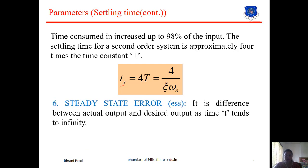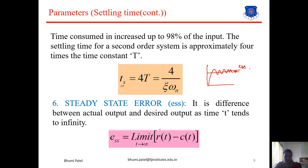Next is the steady state error, which is the difference between the actual output and the desired output as time T approaches infinity. The equation for steady state error is: Ess = lim(t→∞) [r(t) − c(t)] = lim(s→0) s·E(s). These are the key parameters of the second order system response.